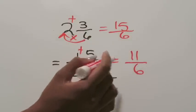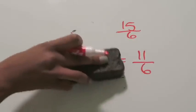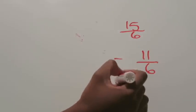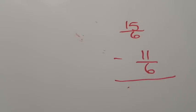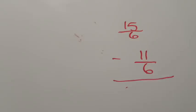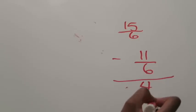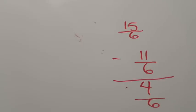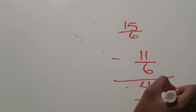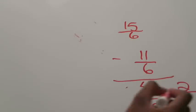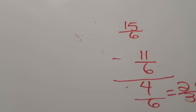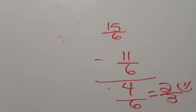Now I can rewrite this as a subtraction problem: 15 over six minus 11 over six. All I need to do is subtract the numerators — 15 minus 11 is 4 — and the denominator stays 6, giving me four sixths. That's not in simplest form because both numbers are even, so both are divisible by 2. Two goes into 4 two times and into 6 three times — giving me two thirds, which is the exact same answer we got in the previous example. I already know it's close to my estimate, so I can feel confident my answer is correct.